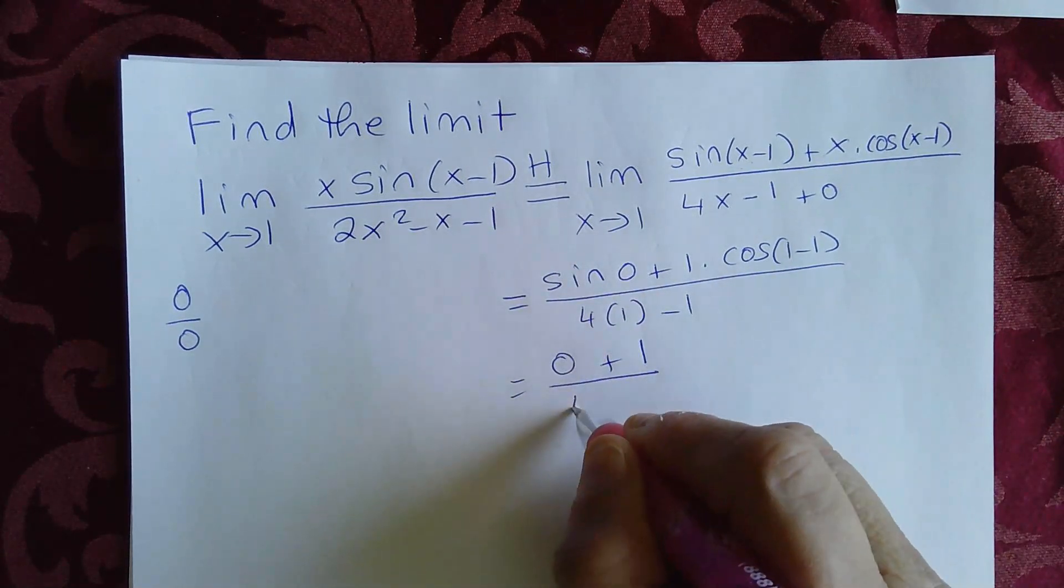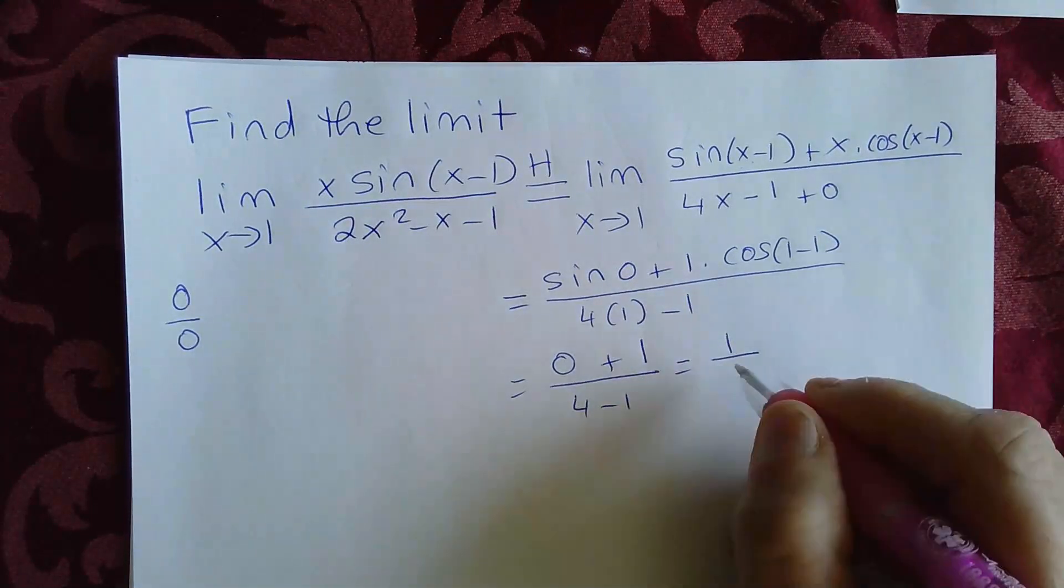Over 4 minus 1, that's 1 over 3. 4 minus 1 is 3.